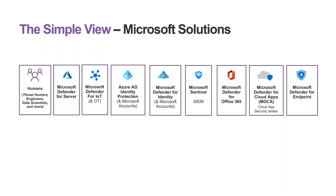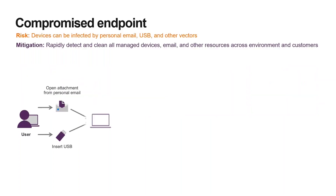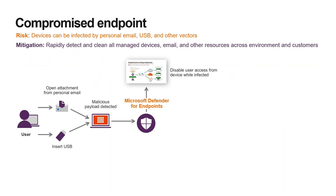Let's look at how these can work together to stop an attack in real time. Keeping it simple with a similar situation raised earlier, let's see the benefits of an integrated Microsoft solution. A user gets a malicious file via email or USB. Microsoft Defender for Endpoint detects the attack, raises the alert, and responds smartly — it disables the user's access to company data, but keeps the device connected to the internet so you can work on a remediation.